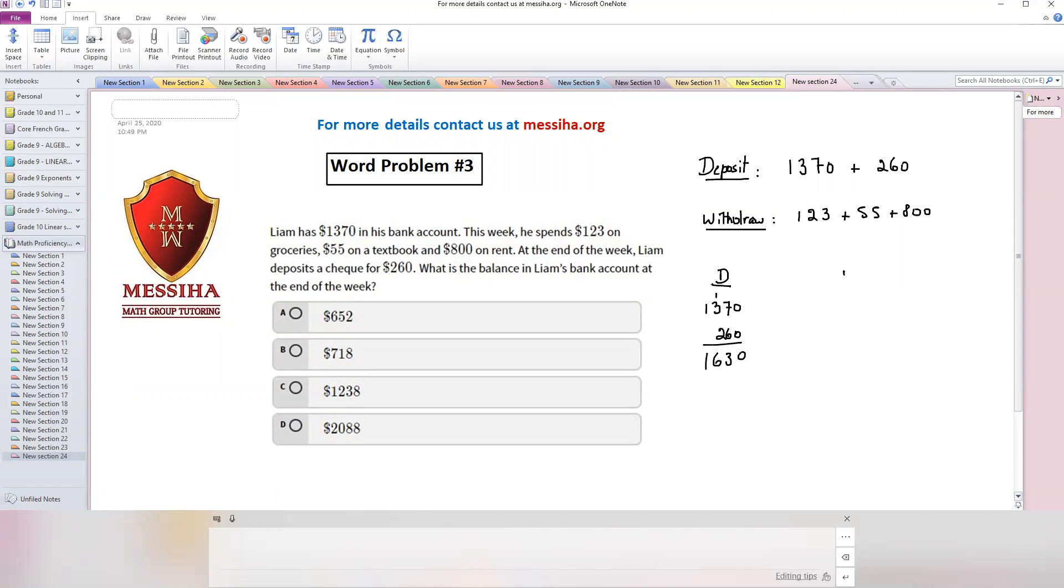The withdraw. I can add $123, the $55, and $800. Five and three, eight. Five and two, seven. Eight and one, nine. Now to check the balance in Liam's bank account I have to subtract this withdraw from this deposit.